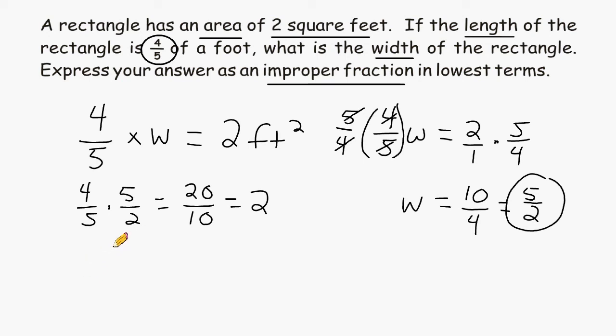So what we could do is take the answer of 2 square feet and divide that by the given dimension of 4 fifths to figure out what the missing width is.